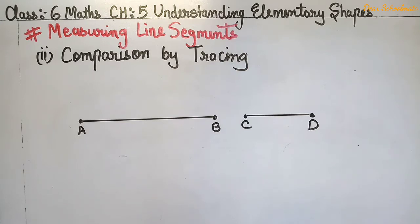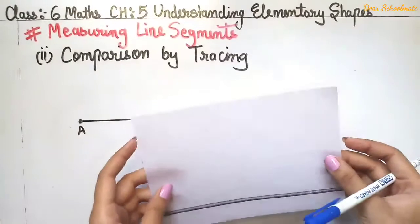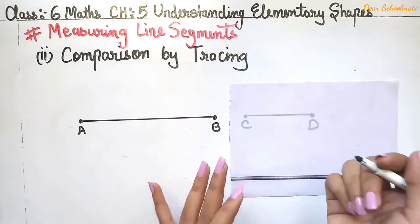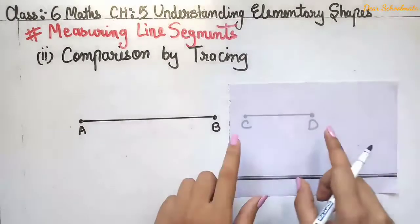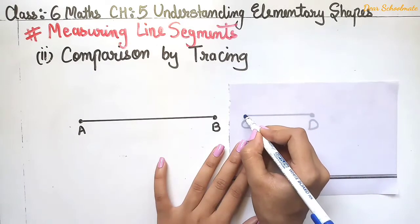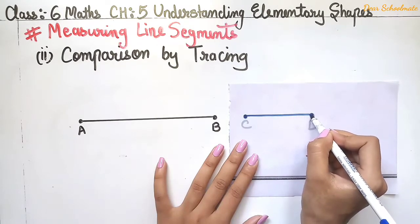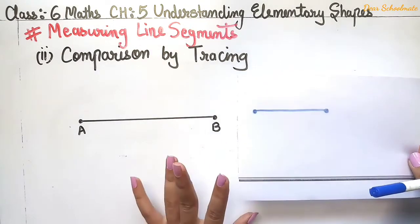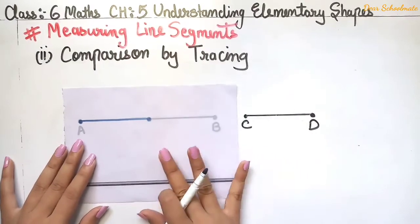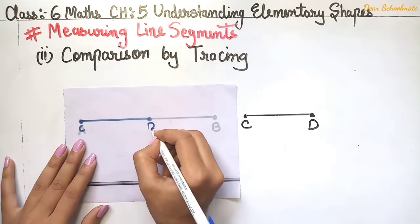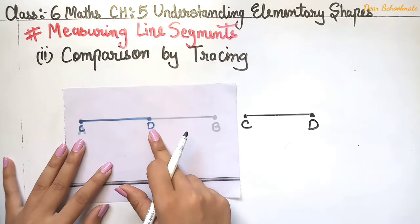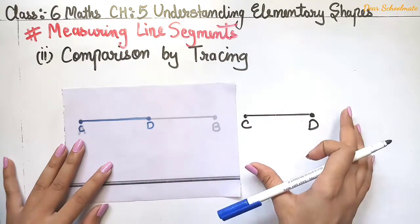We need tracing paper, which is translucent so we can see through it. We place the tracing paper on top of line segment AB, trace it with a pen or marker, then place the traced line over CD to compare. We can then see that CD is shorter than AB — AB is the bigger line segment and CD is the smaller one.